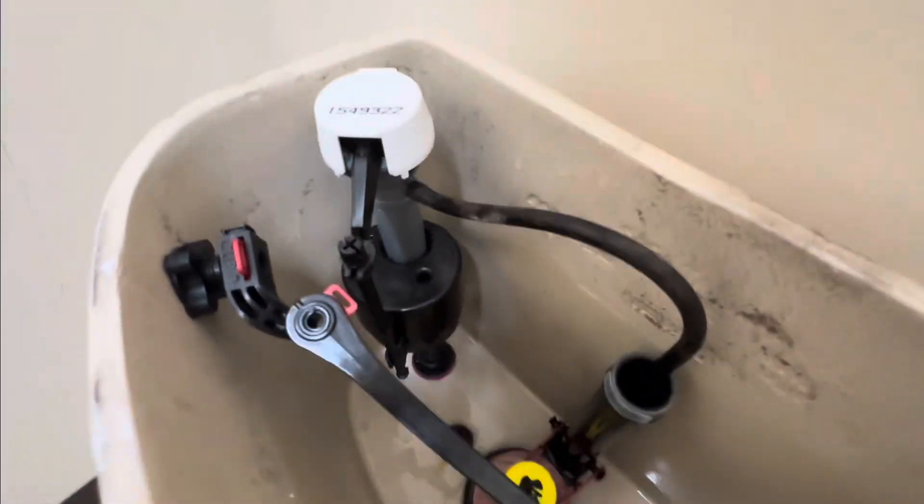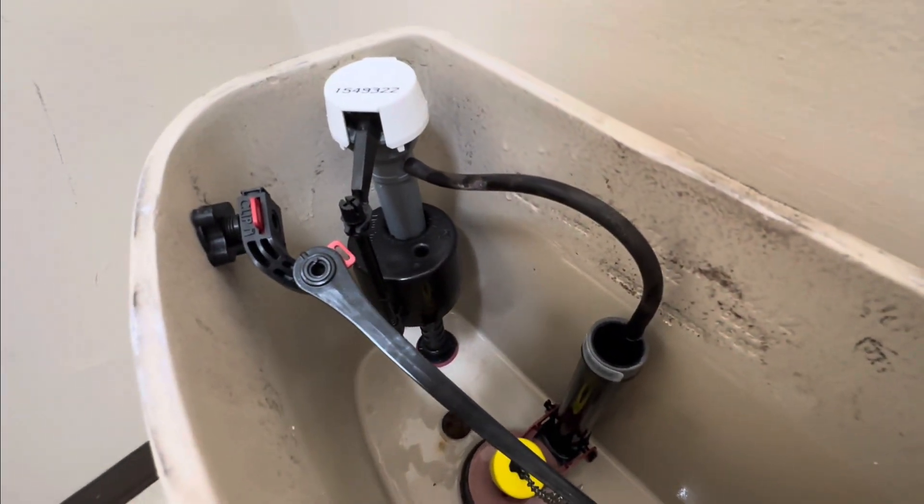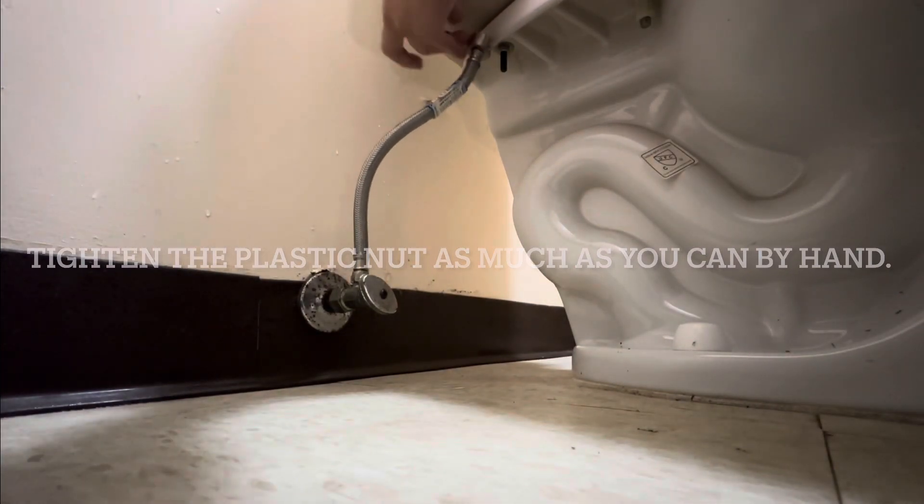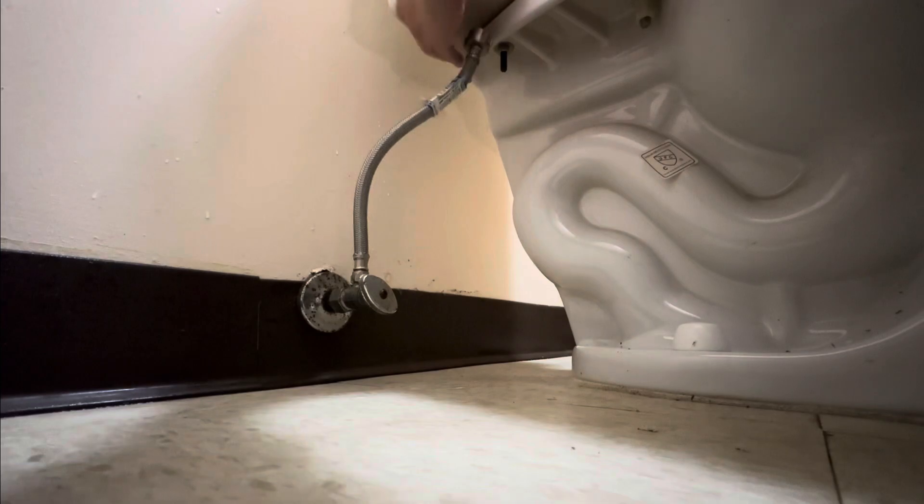That's what this one looks like. Okay, I'm going to hand tighten this as much as I can. And then we're going to use a wrench in a bit after to tighten another quarter turn.